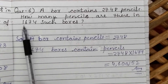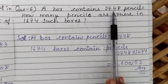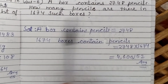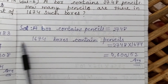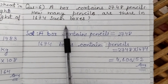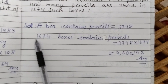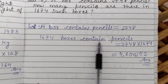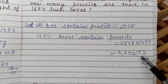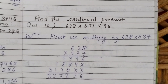How many pencils are there in 1,674 such bags? So one box contains that many pencils. We are asked how many pencils can be there in 1,674 boxes. We multiply the number of pencils per box by 1,674, and you will obtain the answer. Is that clear? Now come to the last question: find the continued product.